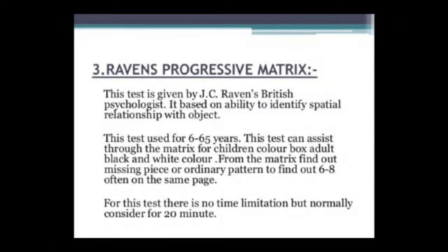IQ of 111 to 120 is above average; 121 to 140 is superior; 140 and above is gifted. Raven's Progressive Matrix test was given by Jesse Raven, a British psychologist, and is based on the ability to identify spatial relationships among objects.